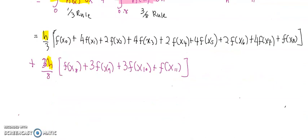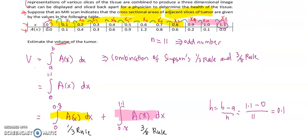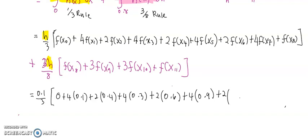Now substitute all values into the formula. So (0.1/3) times [f(x0)... this is the A value. A(x0) = 0 plus 4(0.1) plus 2(0.4) plus 4(0.3) plus 2(0.6) plus 4(0.9) plus 2(1.2) plus 4(0.8) and plus the last term 0.6].